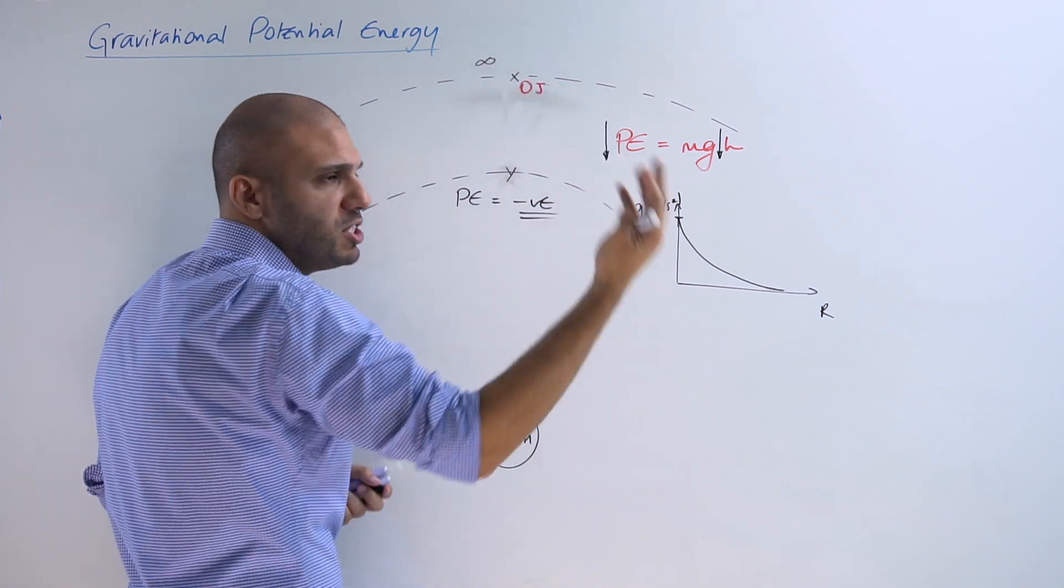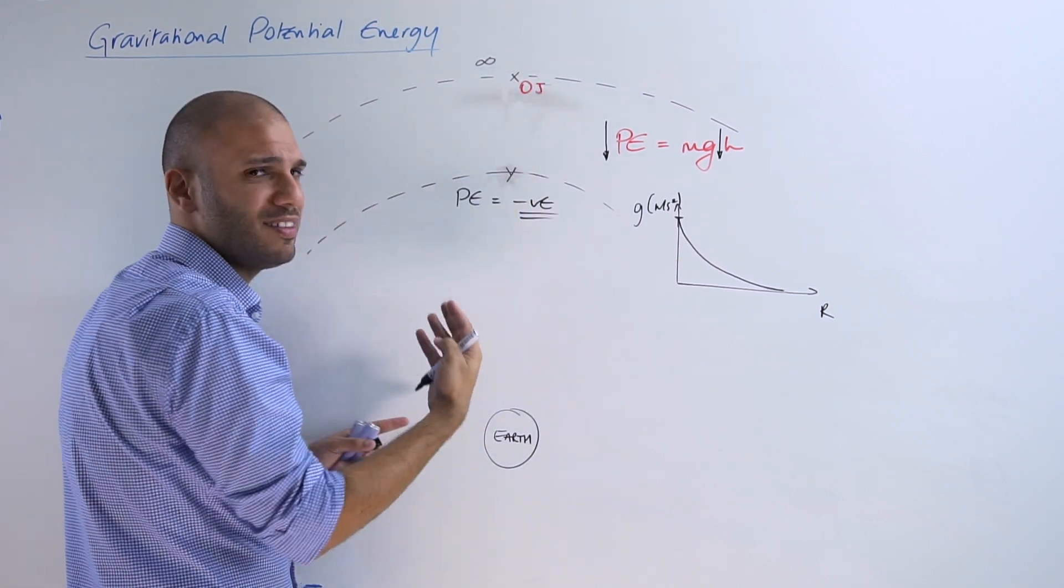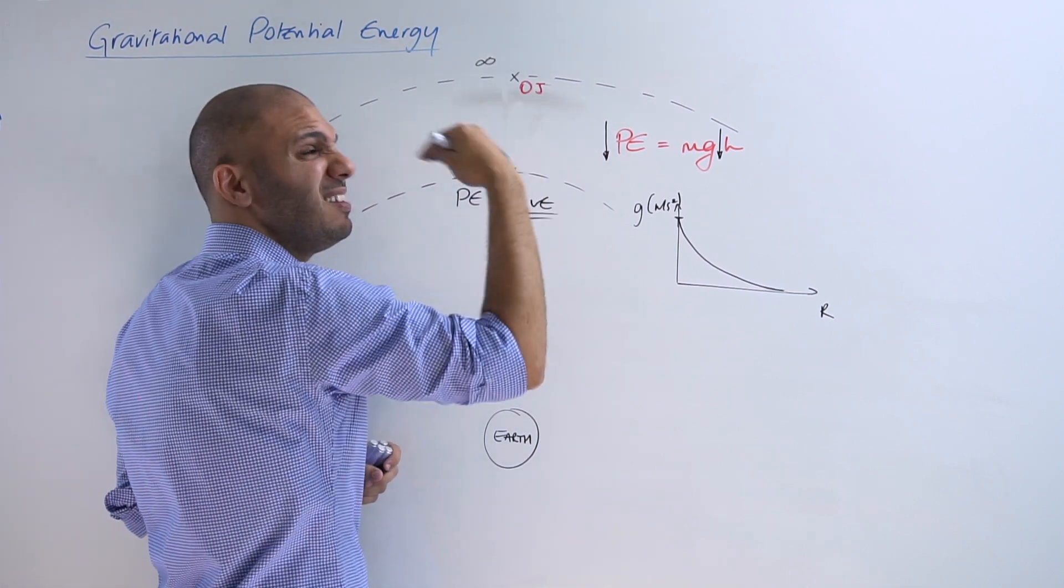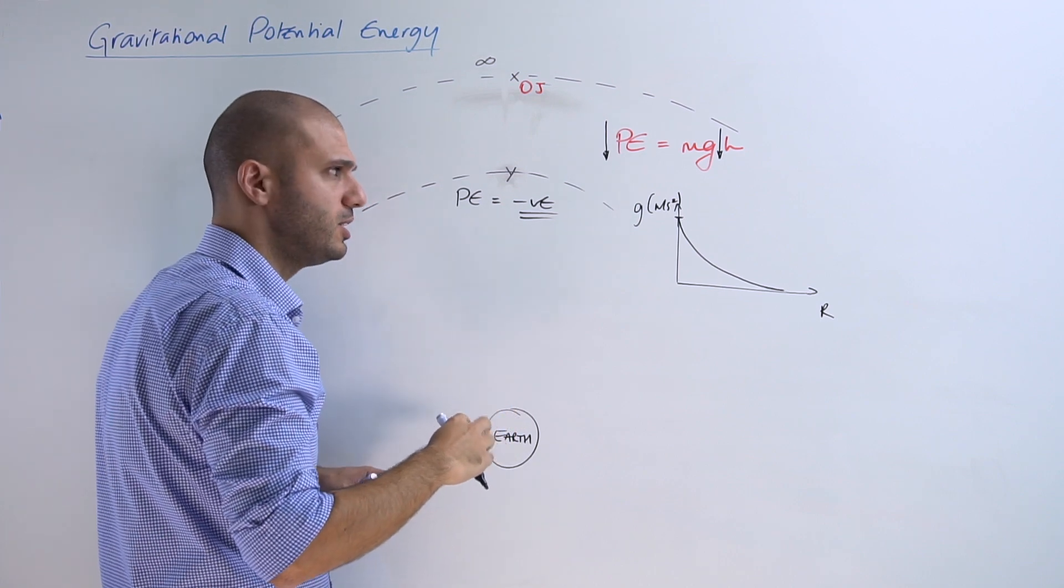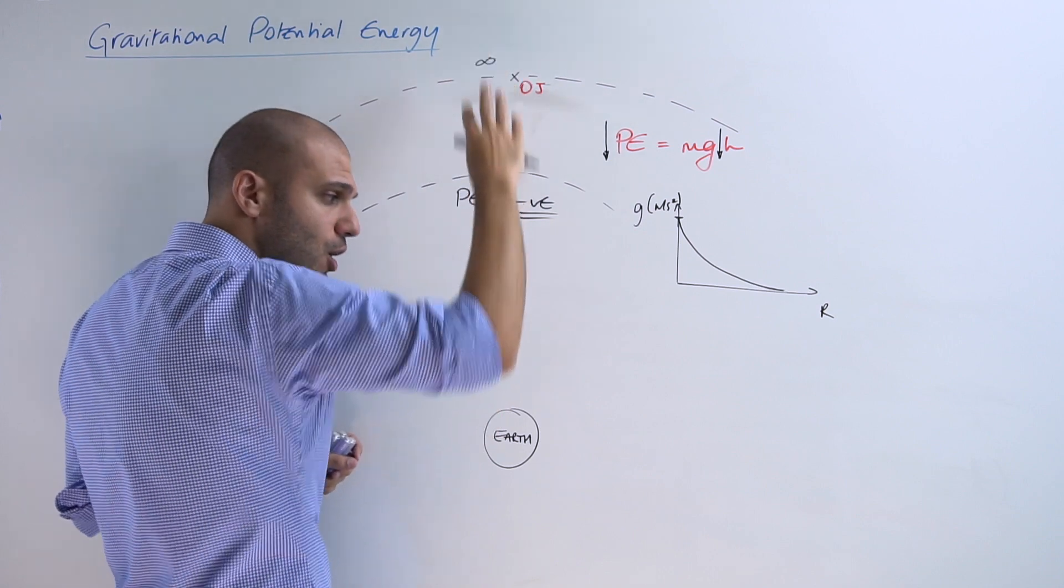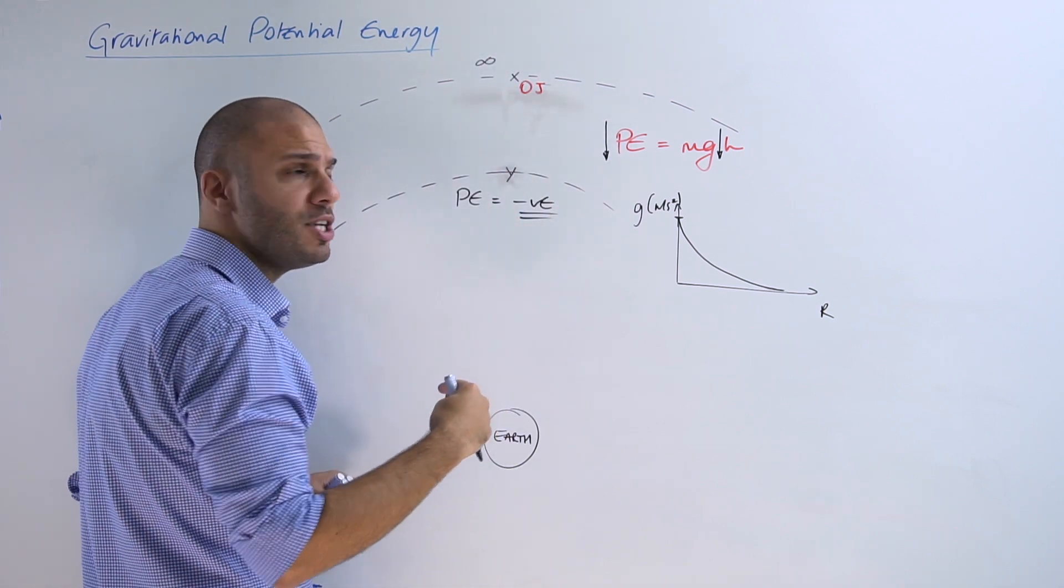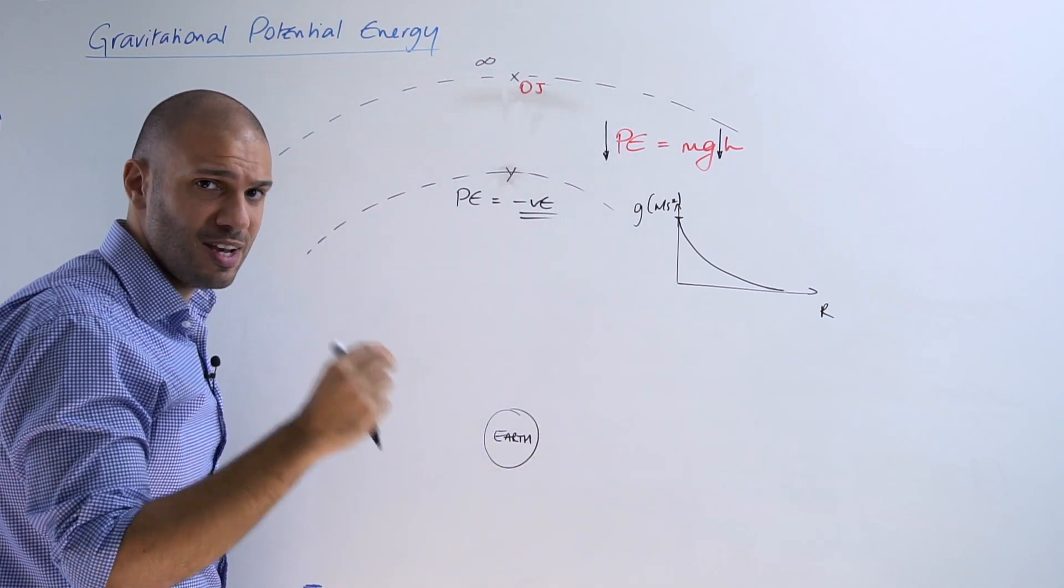So this is something to remember: the zero value, since it's an arbitrary value and everything is worked out with respect to that zero value, is always taken to be at an infinitely high point, at an infinitely large distance away from the center of Earth, whilst all the other values at all other heights closer to Earth will have less potential energy and therefore all those values will be negative in form.